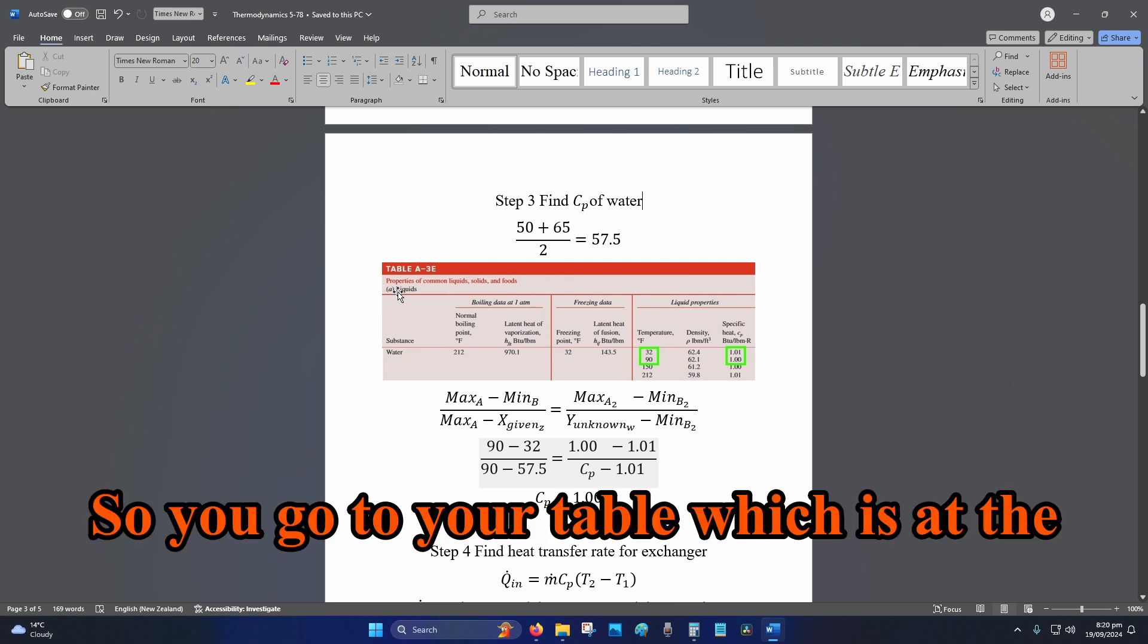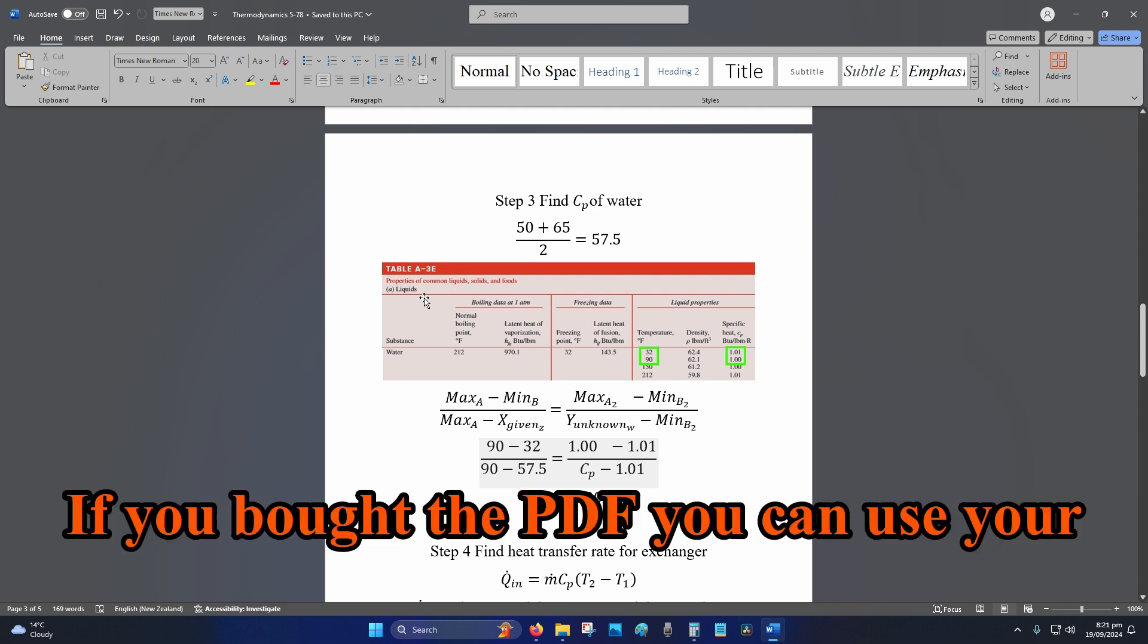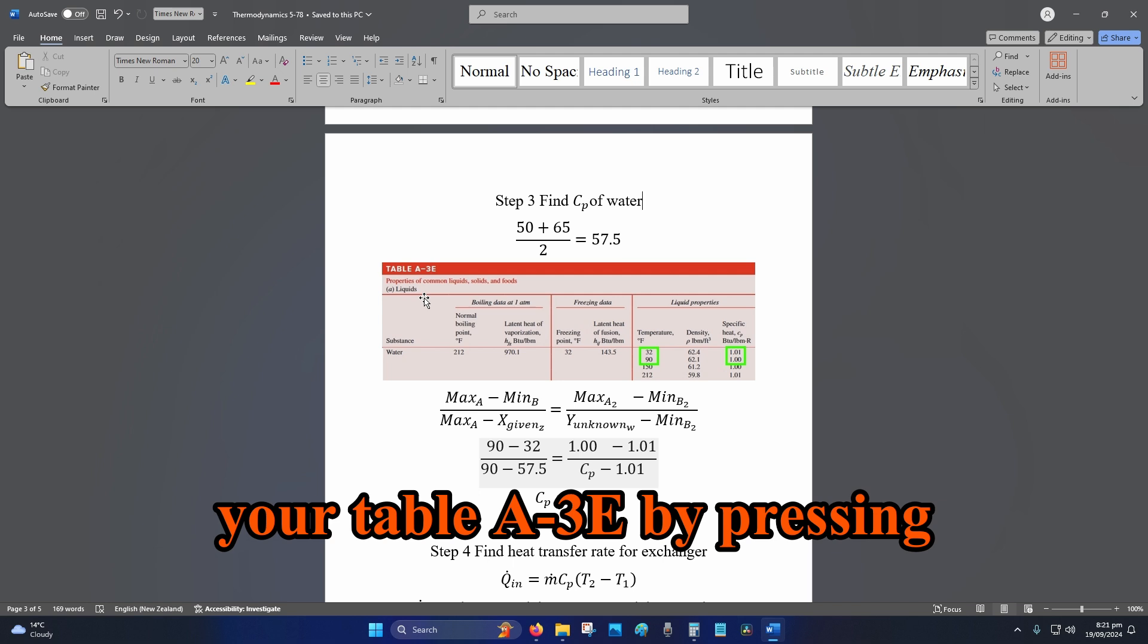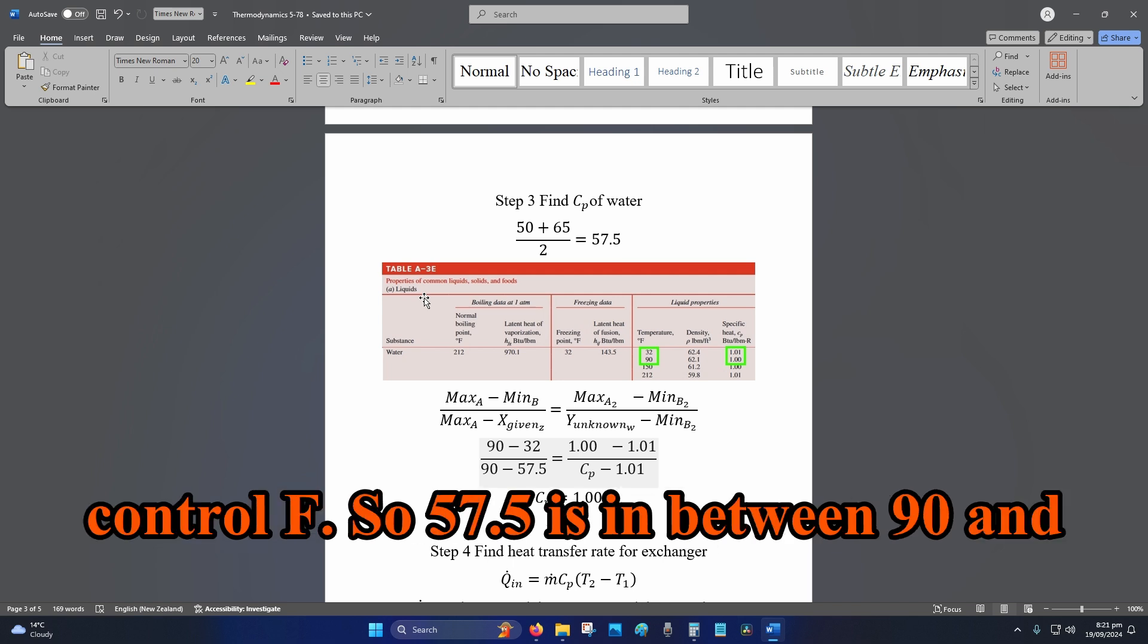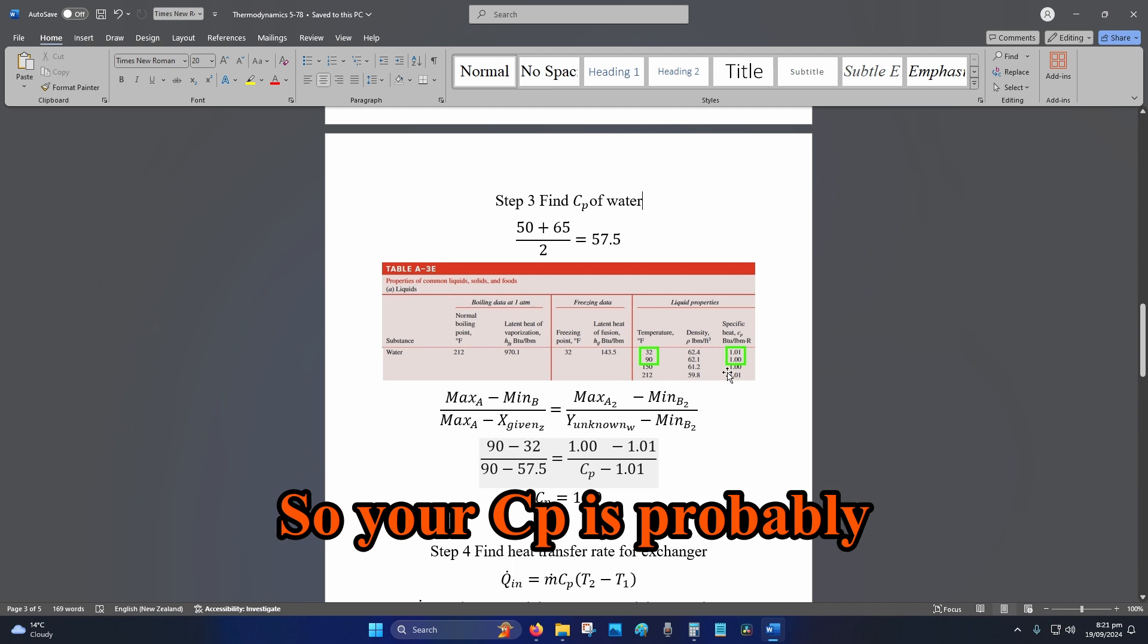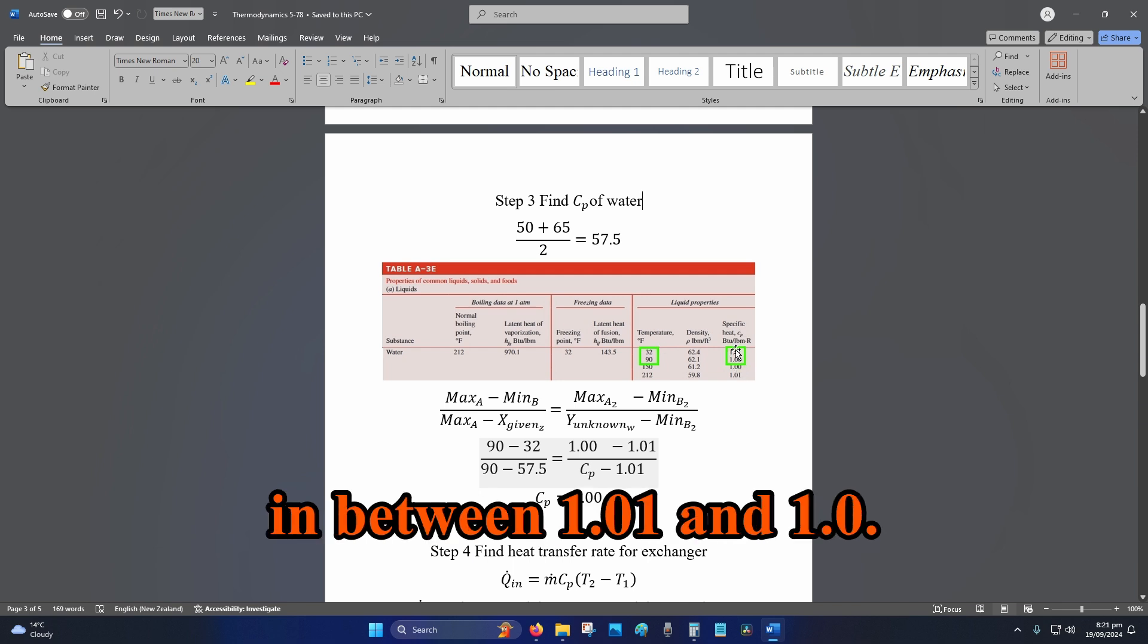So you go to your table which is at the back of your textbook. If you bought the pdf you can use your search function and type in your table A-3 by pressing ctrl F. So 57.5 is in between 90 and 32 degrees Fahrenheit. So your Cp is probably in between 1.01 and 1.0.